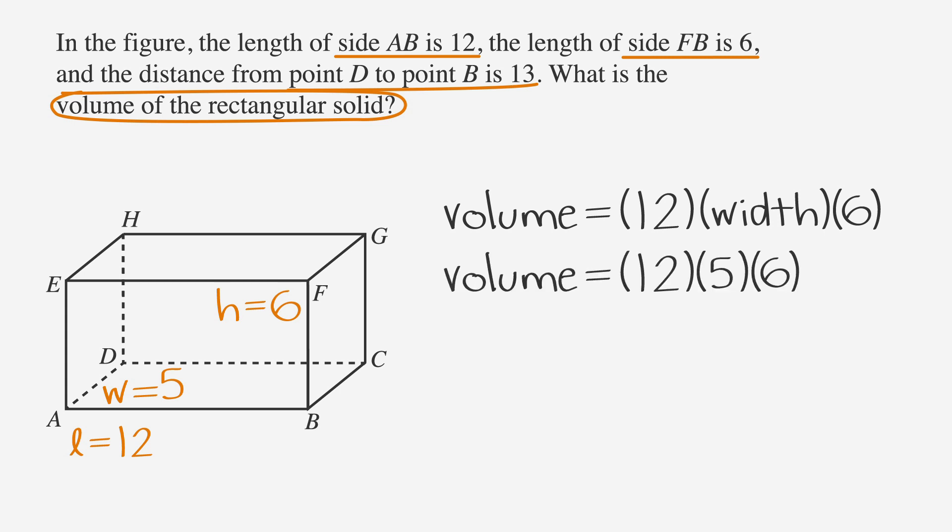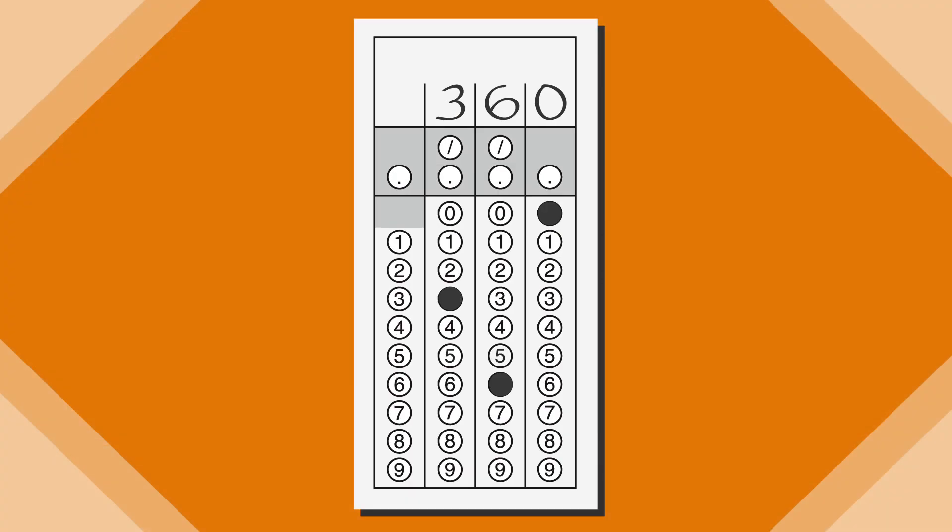Substituting 5 in for the width in the volume equation, we have volume equals 12 times 5 times 6. If we multiply all that out, we get that the volume of our rectangular solid is 360 cubic units. Now you can fill in the grid with the correct answer.